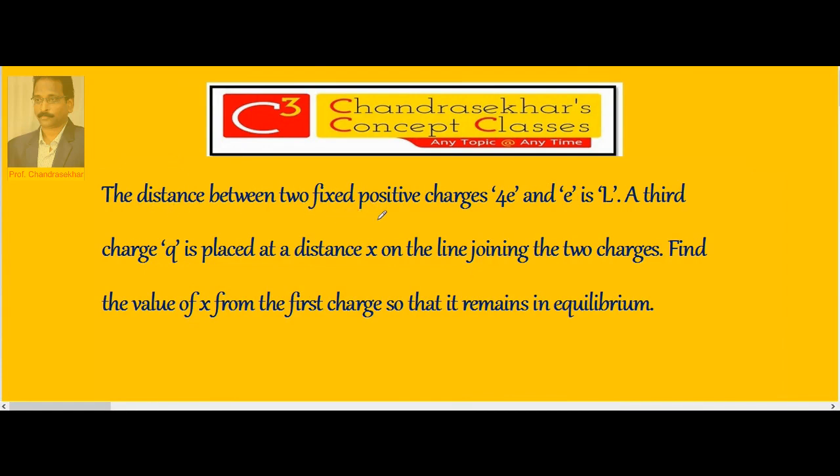The distance between two fixed positive charges 4E and E is L. A third charge Q is placed at a distance x on the line joining the two charges. Find the value of x from the first charge so that it remains in equilibrium.